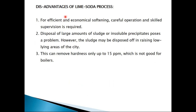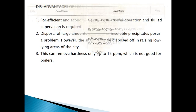There are also some disadvantages of the lime-soda process. For efficient and economical softening, careful and skilled supervision is required, which means the industry has to appoint an engineer for this process, adding cost. Additionally, disposal of large amounts of sludge — calcium carbonate and magnesium hydroxide — is quite difficult in industry. Also, the residual hardness of 50 to 30 ppm is still present, which is not very ideal for boilers, though we can still use this water.